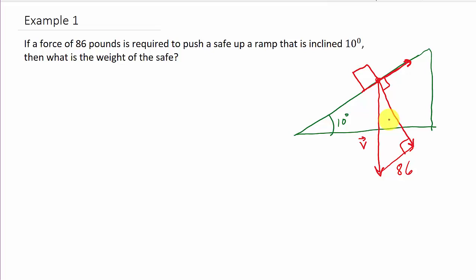We've got to label some other angles. I know that this angle is 80 degrees. This vector is coming straight down, so we know that's a 90 degree angle — it's perpendicular. All angles of a triangle add up to 180, so if this is 90 and this is 10, this has to be 80. And since this line is perpendicular to the ramp, the total angle here is 90, so we know that remaining piece is 10 degrees.